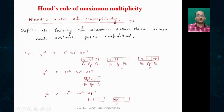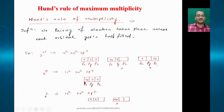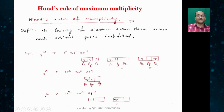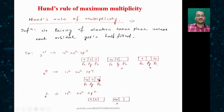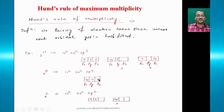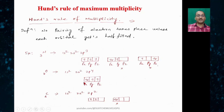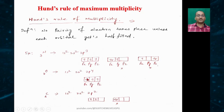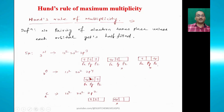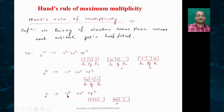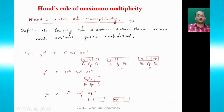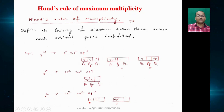For oxygen (1s² 2s² 2p⁴), the 2p orbital has three types: 2px, 2py, and 2pz. The first electron goes in 2px, second in 2py, third in 2pz — each gets half-filled. Then the fourth electron pairs up in 2px. For carbon (1s² 2s² 2p²), one electron goes in 2px and one in 2py; we cannot put both electrons in the same orbital.